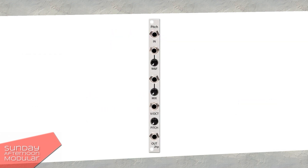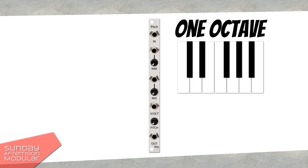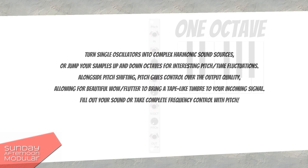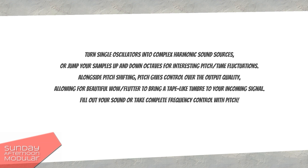Now back to the pitch module. It transposes the pitch up and down two octaves with an additional octave via the volt per octave input. On 2HP's website it reads: turn single oscillators into complex harmonic sound sources or jump your samples up and down octaves for interesting pitch time fluctuations.